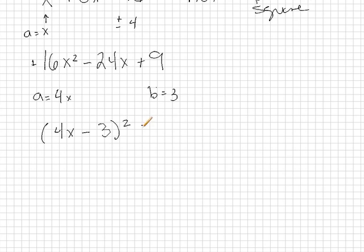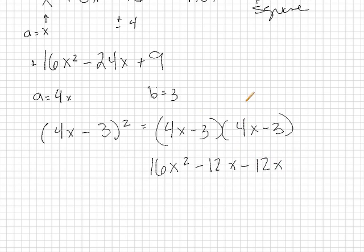So let's go ahead and FOIL out 4X minus 3. 4X minus 3 squared is 4X minus 3 times 4X minus 3. So if I FOIL this, I'm going to get 16X² minus 12X plus 9. If we simplify this, we're going to get 16X² minus 24X plus 9,